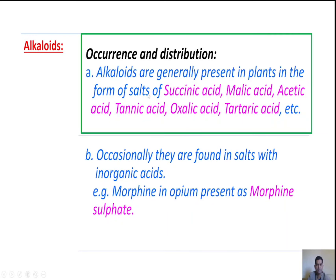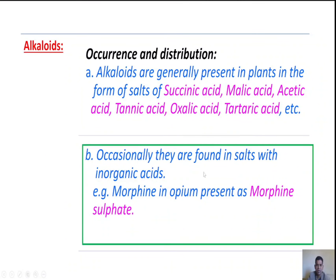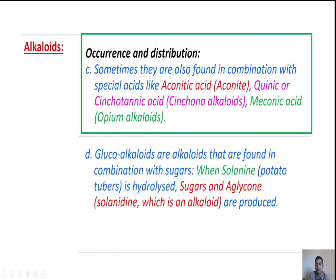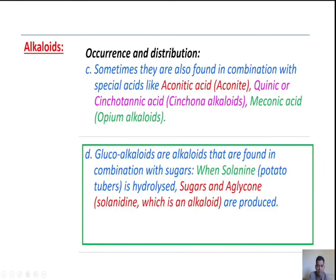Next, occurrence and distribution. Alkaloids are generally present in plants in the form of salts of succinic acid, malic acid, acetic acid, tannic acid, oxalic acid, tartaric acid, etc. Occasionally they are found as salts with inorganic acids — for example, morphine in opium is present as morphine sulfate. Sometimes they are found in combination with special acids like aconitic acid in aconite, cinchotannic acid in cinchona alkaloids, and meconic acid in opium alkaloids. Alkaloids are also found in combination with sugars and are called glucoalkaloids — for example, solanidine, which upon hydrolysis gives sugar along with solanidine as the aglycone.